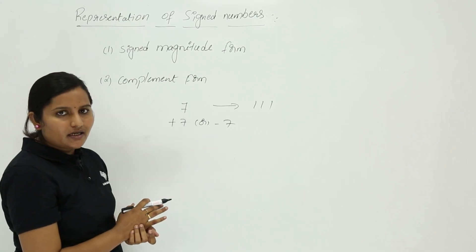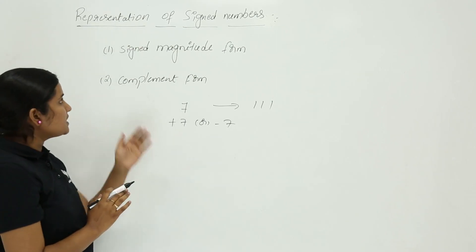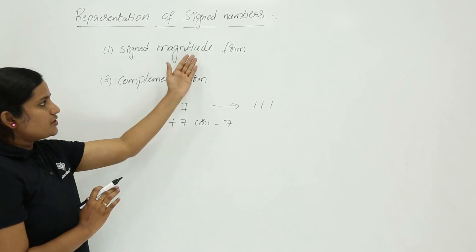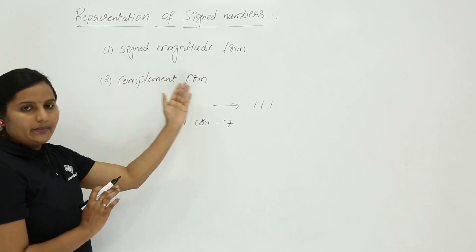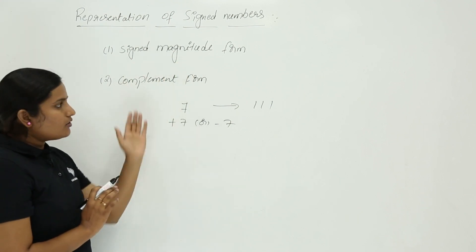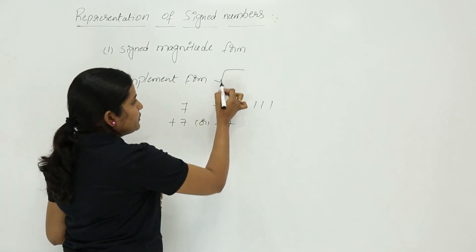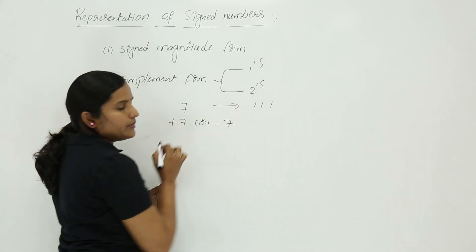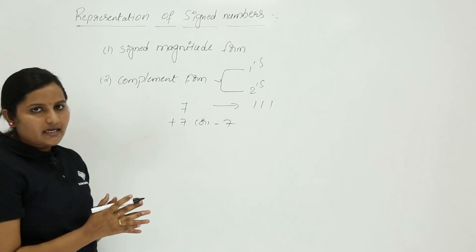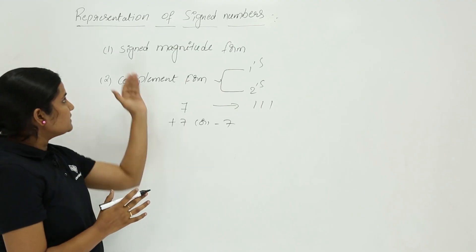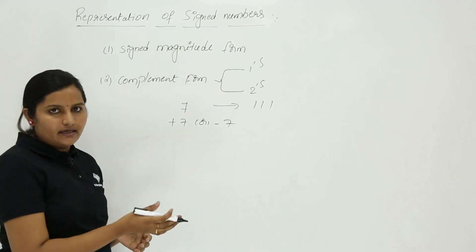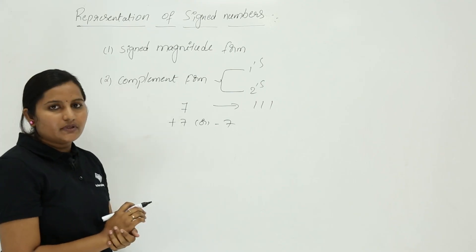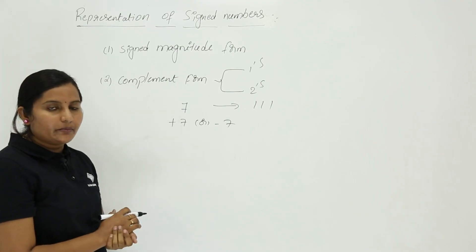We can represent any signed number using two forms: signed magnitude form or complement form. In complement form, there are two types: one's complement and two's complement. In this class we will discuss signed magnitude form, and in the next classes we will discuss one's complement and two's complement.